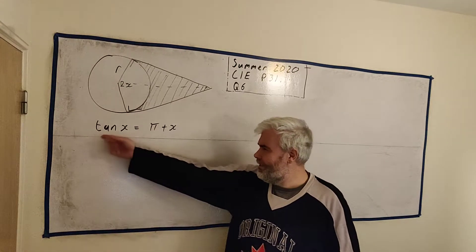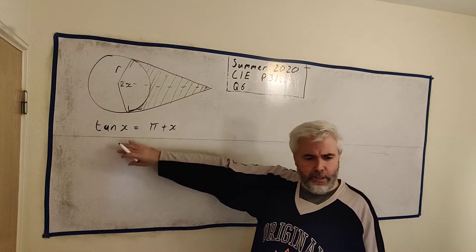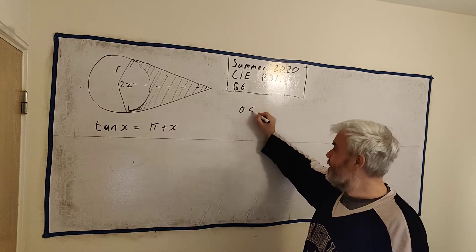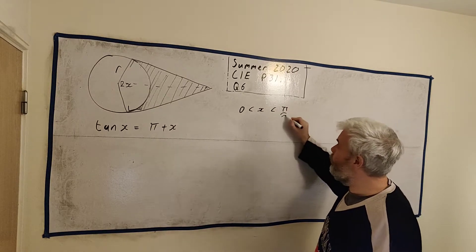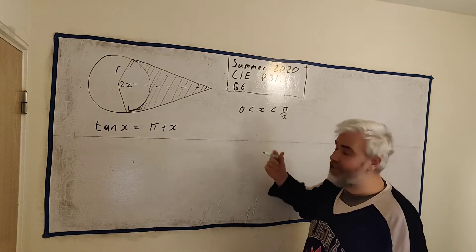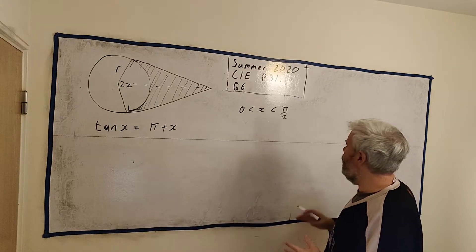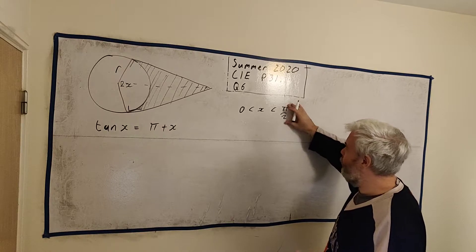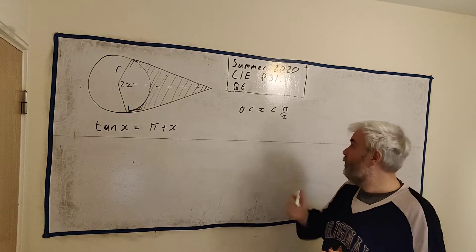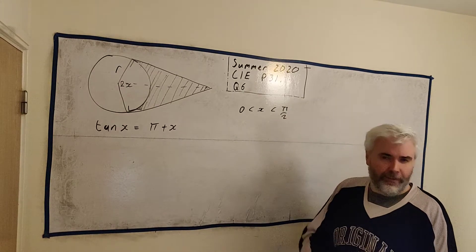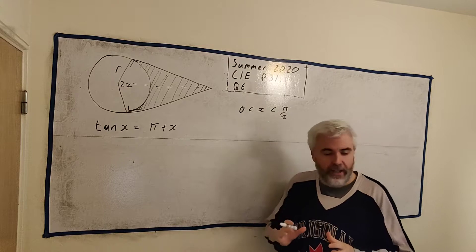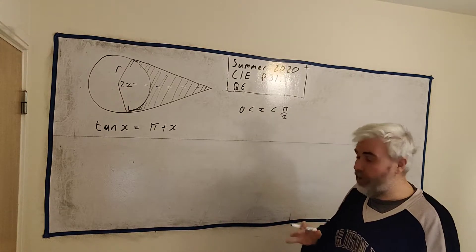So for part B, they tell us that this equation has one root between 0 and pi over 2. It has one root in there. And they ask us to verify that that root x is between 1 and 1.4. So this is about 1.6 or so. This is 0. They're telling us just a little more exactly that we can verify it's between 1. Remember, pi is 3.14. So divided by 2 is 1.5. But they're asking us to find that it's between 1 and 1.4.